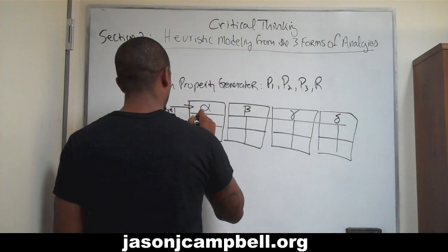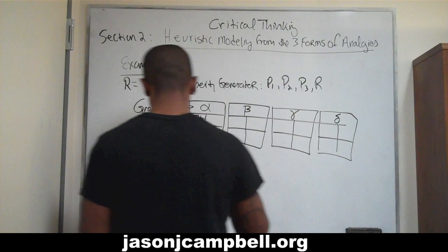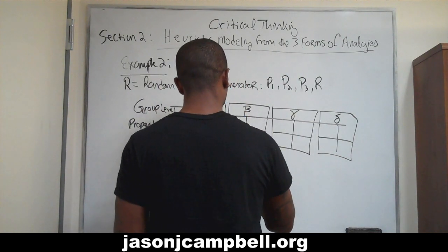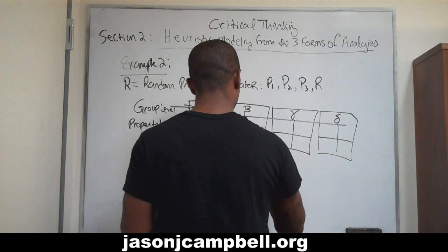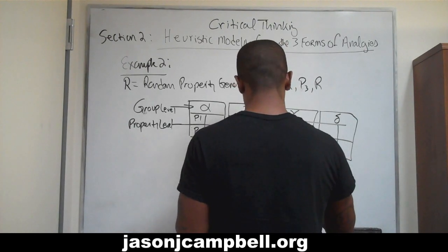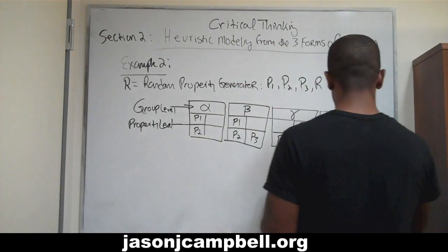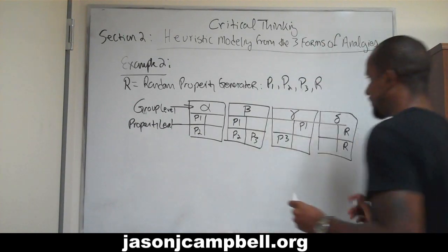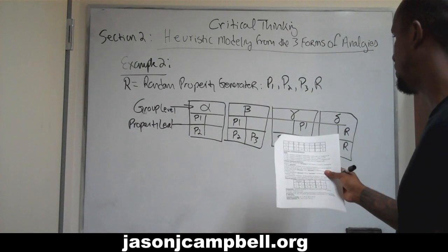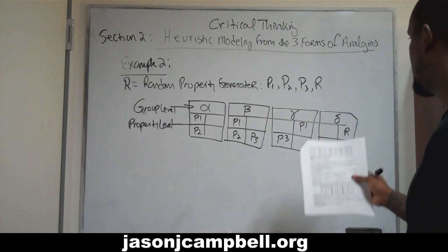Alpha has P1 and P2 as properties. Beta has P1, P2, and P3. Gamma has P3 and P1. And delta has two random property generators. So it looks like: P1, P2, P1, P2, P3, P3, P1, and two random properties.